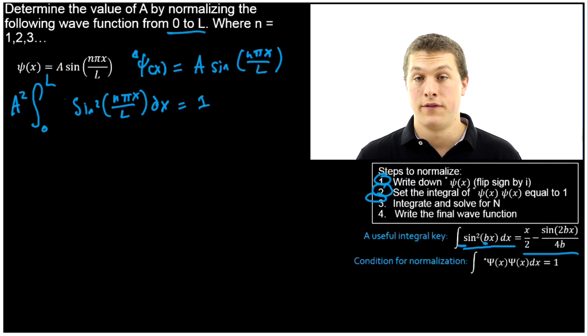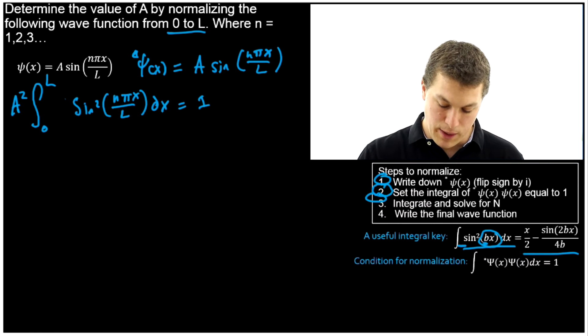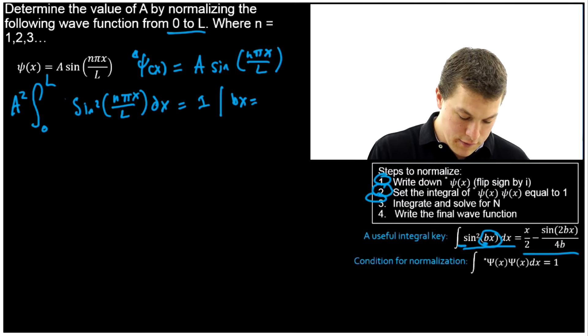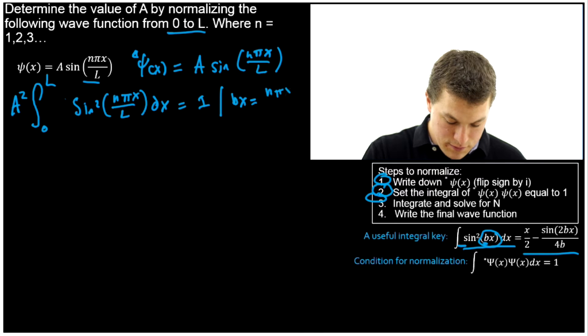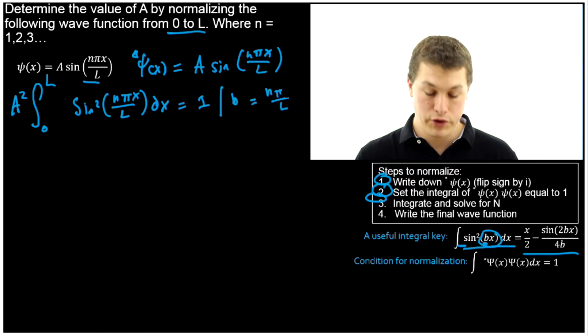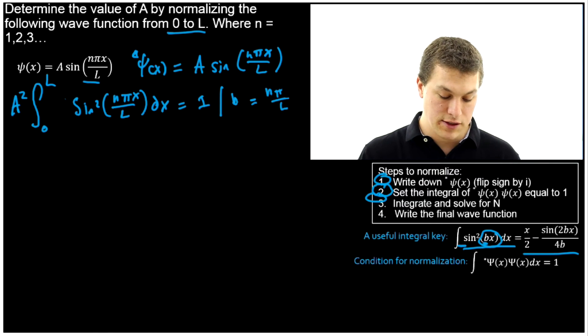And the easiest way to identify these constants is just look at the argument in your sine and look at the argument in the integral key, and just set them equal to each other. So what we can say is, okay, bx is equal to the argument in our sine, nπx/L. And the x's are going to cancel, and what that means is we're going to go ahead and get just that b is equal to nπ/L. So that's our b, and that's going to let us easily solve this integral.